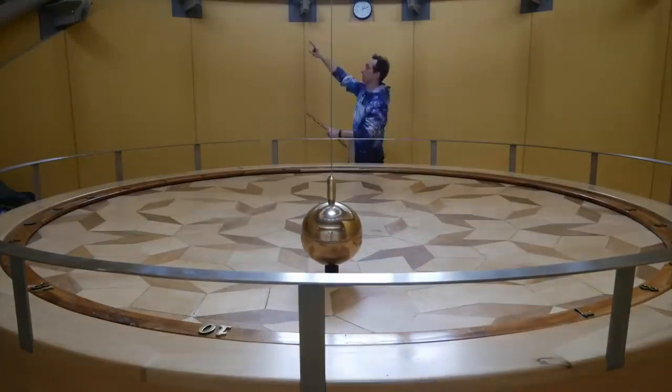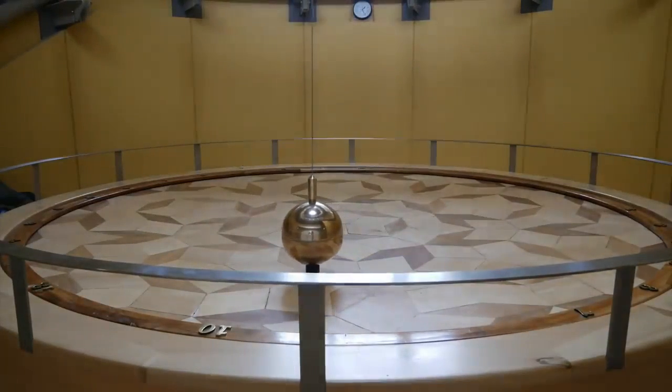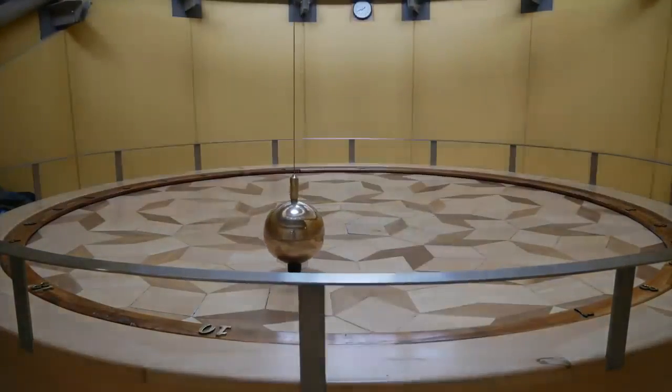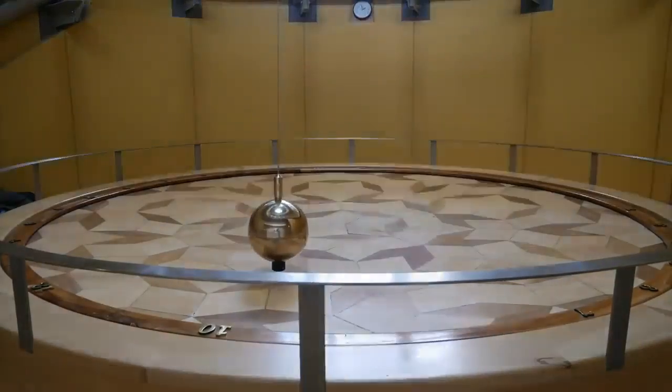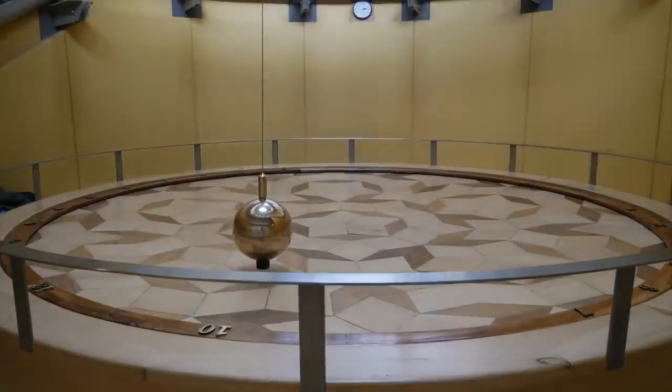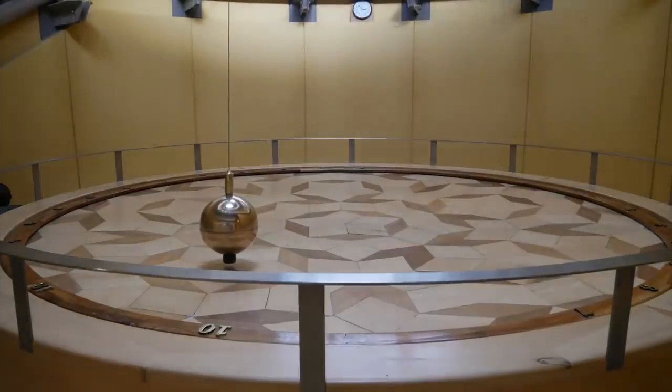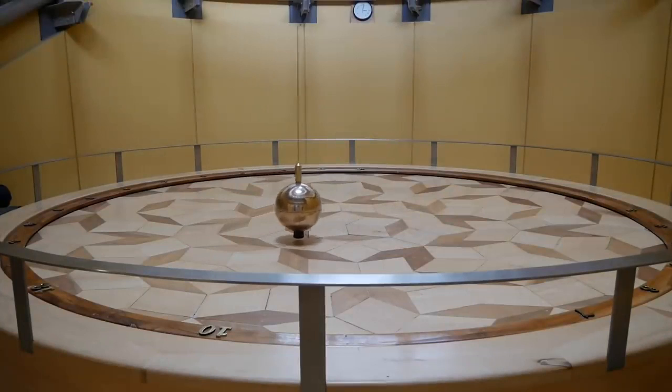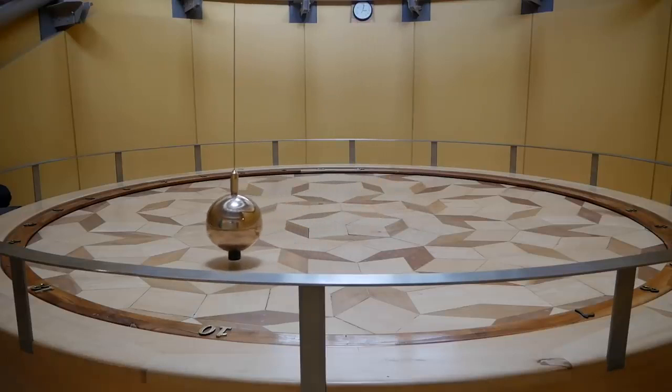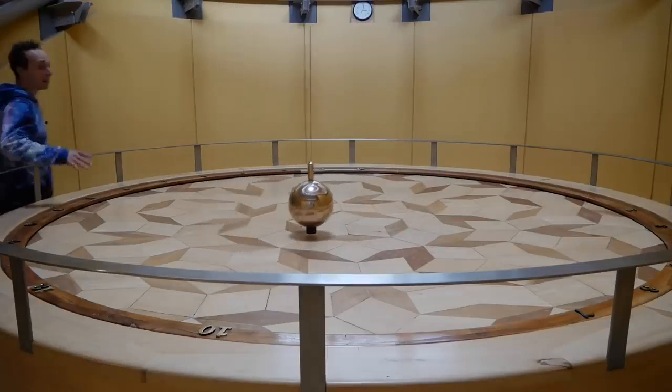But no one had figured out how to do an experiment to actually test that until 1851, when a physicist named Leon Foucault came up with this. And that provided the very first simple proof that the Earth rotates. He did all of that using nothing but a pendulum. And if you ask me, that is pretty remarkable. And that is a pendulum day.